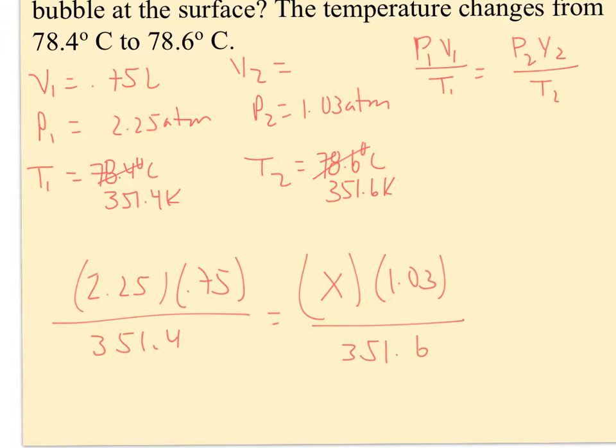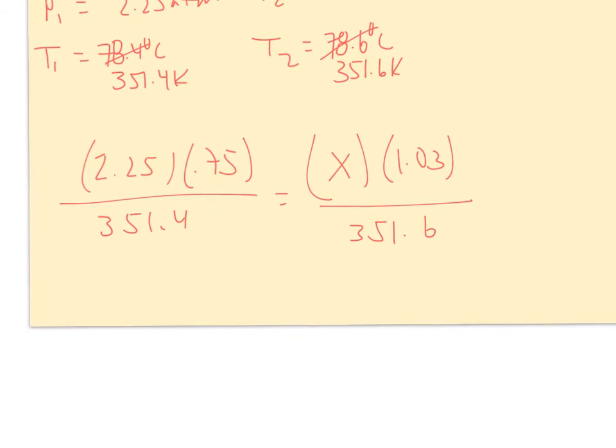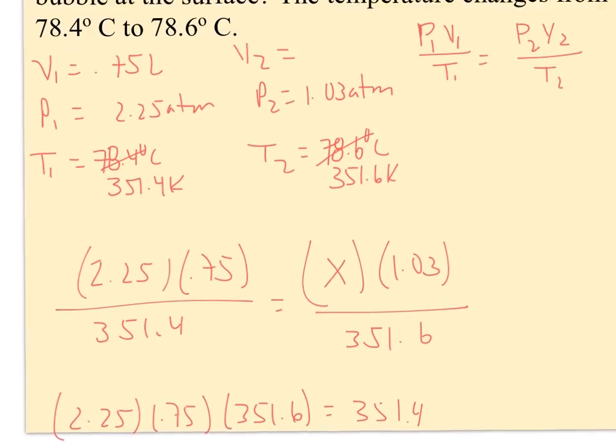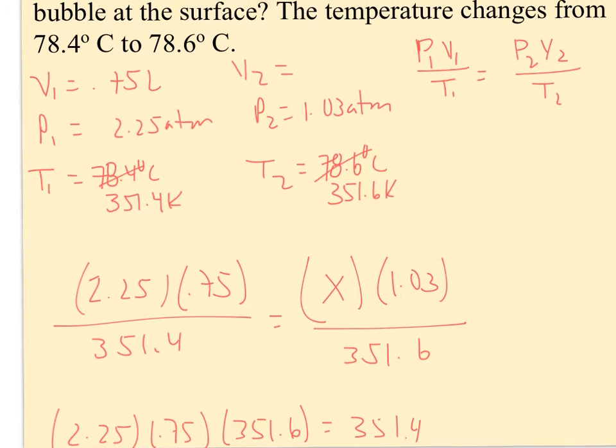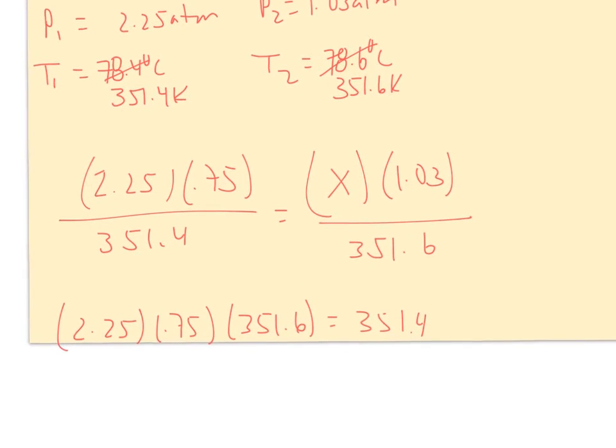And the process is still the same here. I'm going to cross multiply and divide. So when I cross multiply, I get 2.25 times 0.75 times 351.6 equals 351.4. I feel like I have something wrong here. Let me just go back and check. I guess my temperature didn't change very much. Okay.